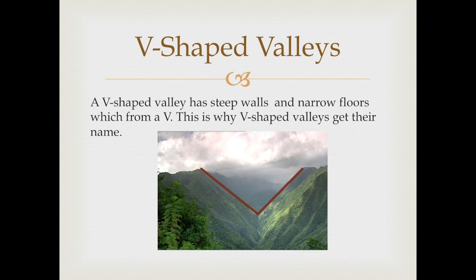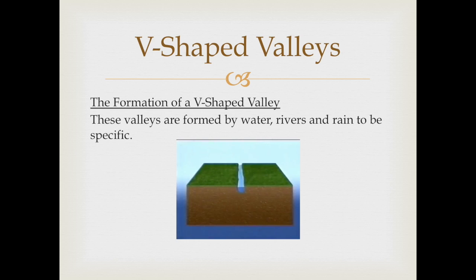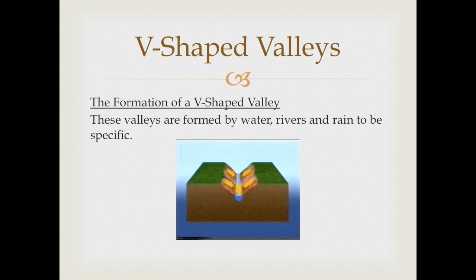V-shaped valleys are created when fast-flowing rivers move across the earth's surface. As the river quickly flows downhill, the rushing water picks up and carries boulders, rocks, and soil away from the area. The river begins to cut a deep path downward through the land, which forms a valley.